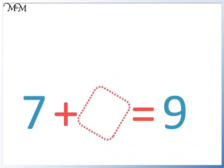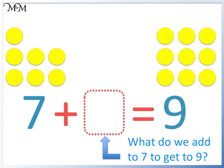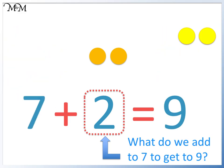What do we add to 7 to get 9? Here is 7, here is 9. Counting on 1, 2, 3, 4, 5, 6, 7, 8, 9. We have added 2. Or we can do our total subtract the other number. 9 take away 7 leaves 2.